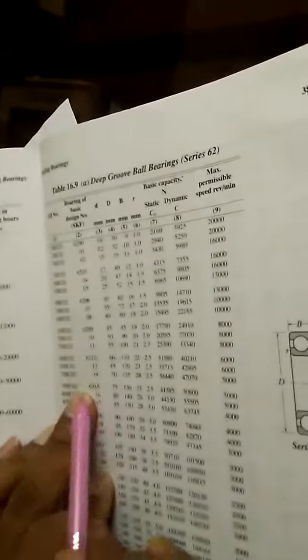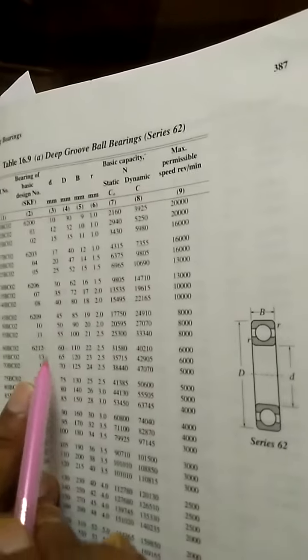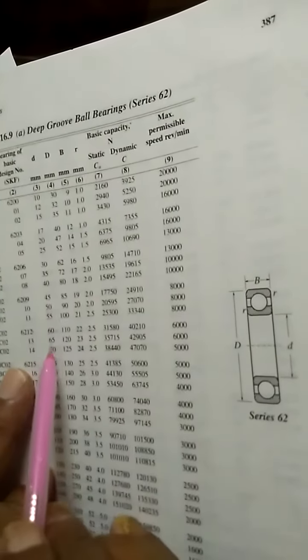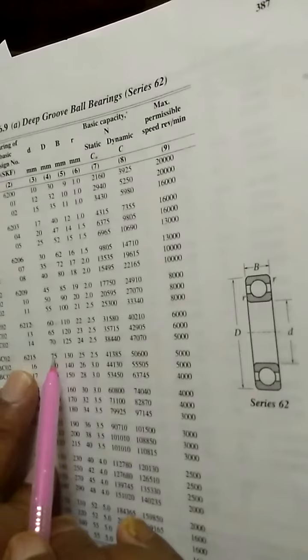Therefore, when I go for the bearing catalog here, 62 series I am going to refer. You have to see in this diameter D, small diameter, bore diameter, so 75mm comes over here.